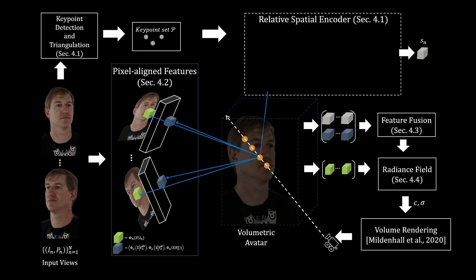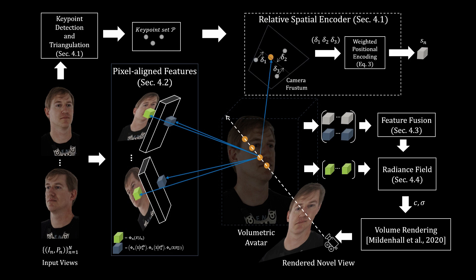The predicted color and density are accumulated along the ray via volume rendering for novel view synthesis. The key idea of our approach is the reduction of spatial ambiguity by leveraging 3D keypoints and creating a novel spatial encoding by computing the relative reprojection difference between a given query point and the estimated keypoints.